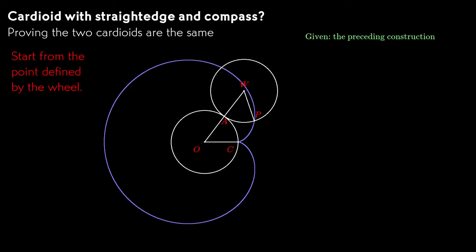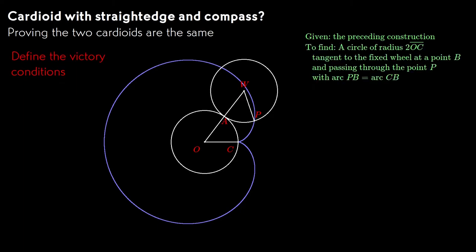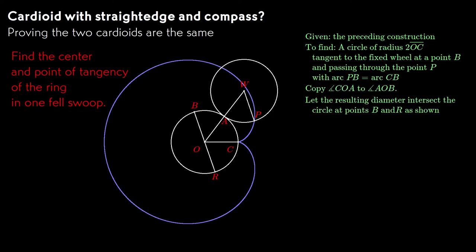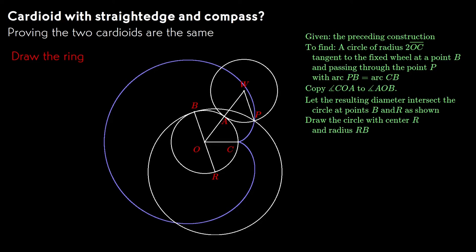So we'll start from the point that we constructed on the wheel. And of course we have to specify what it is we're trying to find, which is the position of the ring. We already showed that doubling the central angle gives us the center of the ring, and the point of contact. So we can draw those in immediately. And then draw the ring with our compass. And when we draw the radius from the center of the ring through the cusp, I claim this will always hit the ring at the same point on the cardioid.